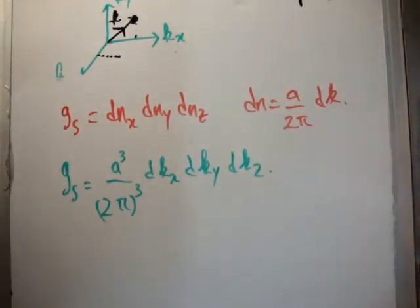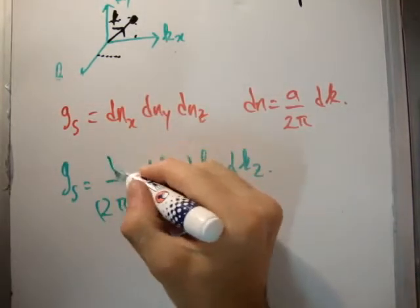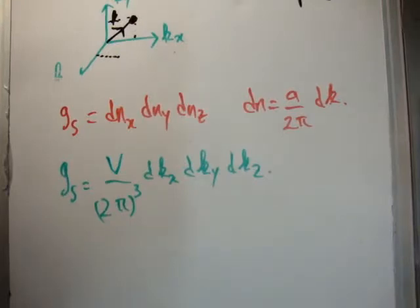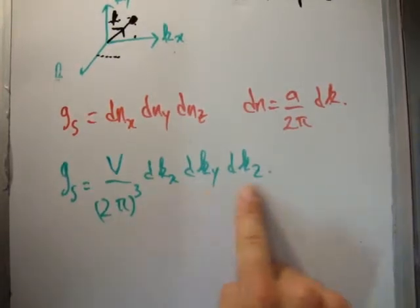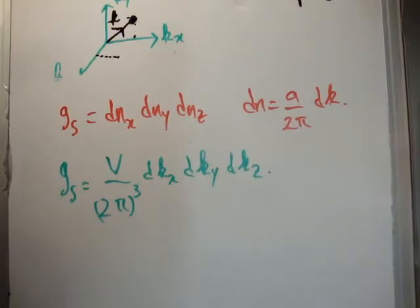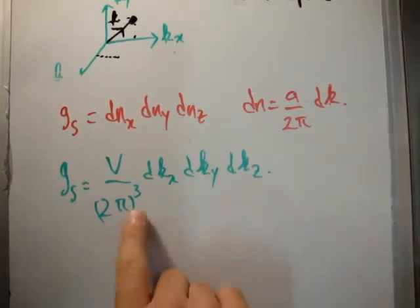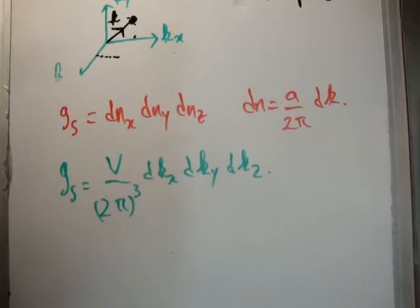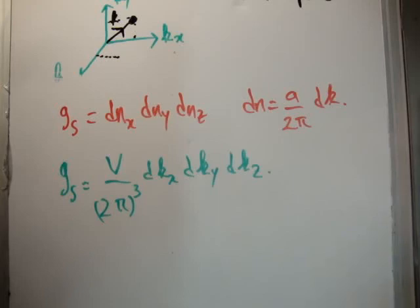The number of states in vector n-space is dn sub x times dn sub y times dn sub z. Since dn equals a over 2π times dk, the number of states in vector k-space equals a cubed over (2π)³ times dk sub x times dk sub y times dk sub z. Now a cubed is going to be the volume V. So the number of states in vector k-space is the volume dk dy dz multiplied by this scaling factor V over (2π)³. It gets more complicated when you go to momentum and energy space, and hopefully you can see why we characterize the density of states using the quantum number n. Thanks for watching — please share with friends, subscribe to my channel, and check out my website.